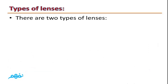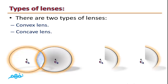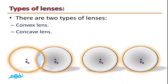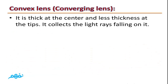Types of lenses: There are two types of lenses. The first is the convex lens, and the second is the concave lens. A convex lens, also called a converging lens, is thick at the center and less thick at the edges. It collects the light rays falling on it.